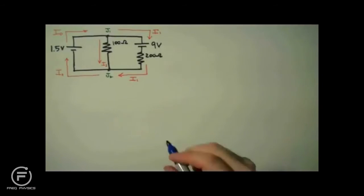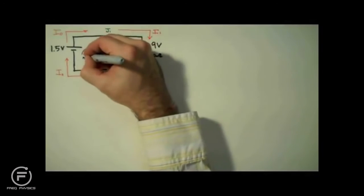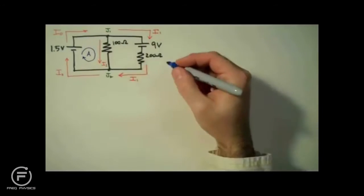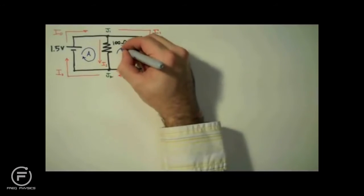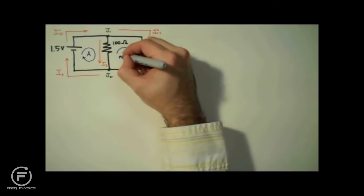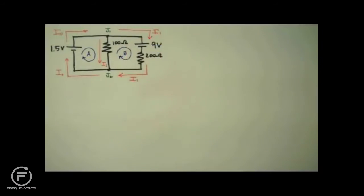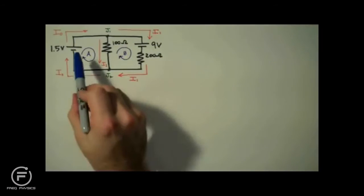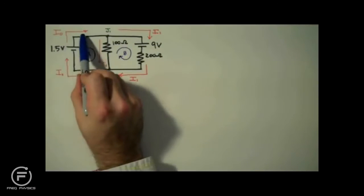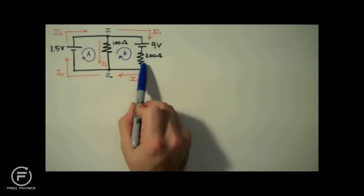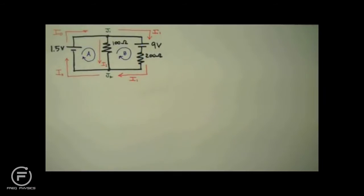Next, we label our loops. I'll label this loop A and this loop B. Just like the currents, the direction of your loops is arbitrary. You can label this outer perimeter loop C if you'd like — I'm not going to. I anticipate we won't need it.